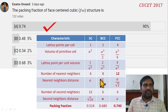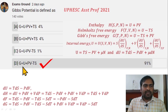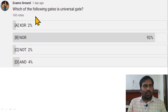Gibbs potential is defined as G = U + PV - TS. Enthalpy is defined as U + PV, Helmholtz free energy F = U - TS, and Gibbs free energy G = U - TS + PV. So this is the expression.